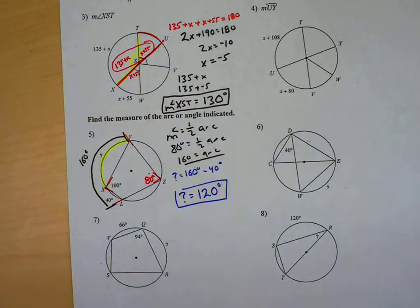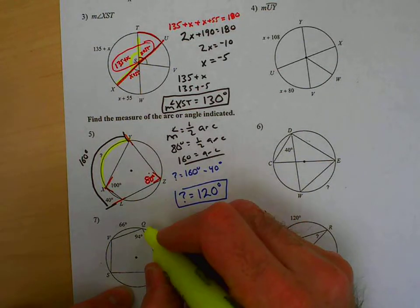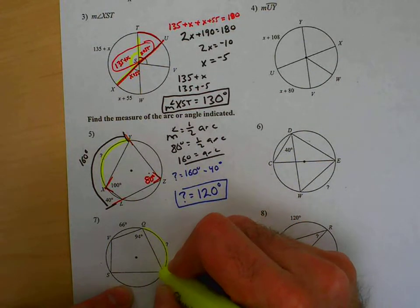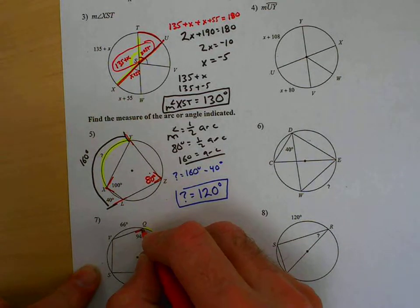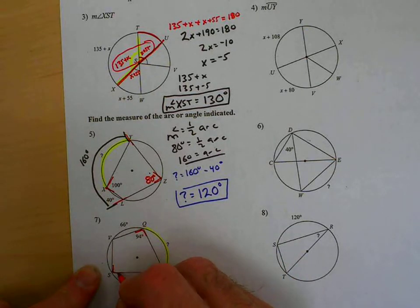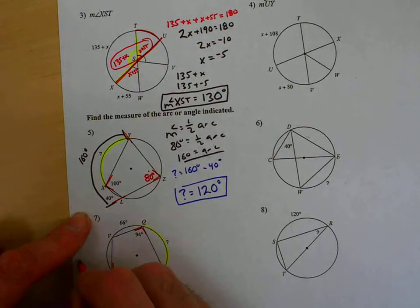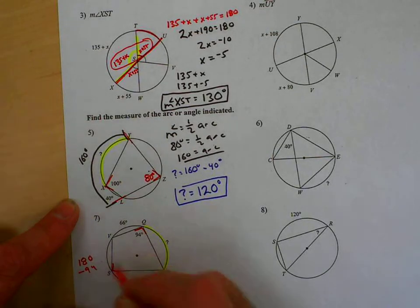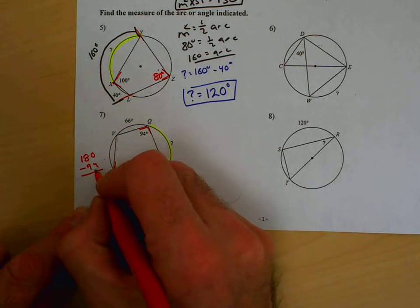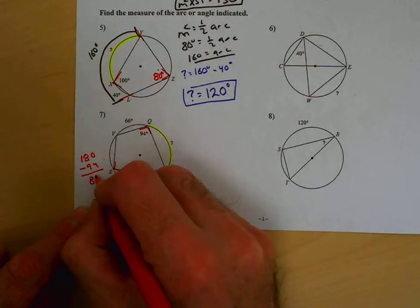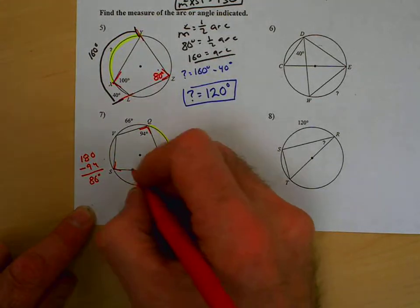The next question, the indicated arc or angle is the arc here. Now, similar to what we just did, I would almost tackle it exactly the same. This is 94, and this is an inscribed quadrilateral. So, these two match up. So, 180 minus 94. 180 minus 94 is going to give me 86 degrees. So, that makes this 86 degrees.